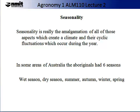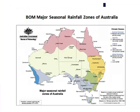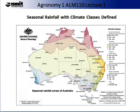Seasonality is really the amalgamation of all of those aspects which create a climate and their cyclic fluctuations which occur during the year. In some areas of Australia, the Aboriginals had six seasons: the wet, the dry season, summer, autumn, winter and spring. The Bureau of Meteorology has characterised major seasonal rainfall zones for Australia. You can see that many different types of zones exist, from a temperate climate through to a more marked hotter and drier climate. Each colour represents a different climate class. This figure, also produced by the Australian Government Bureau of Meteorology, defines the climatic classes by rainfall in millimetres, with the colours associated with the amount of rainfall these areas on average receive.